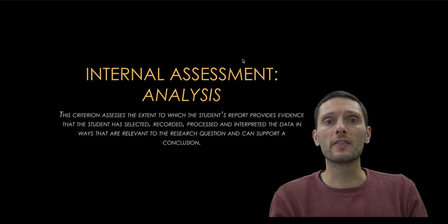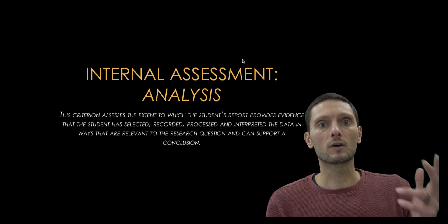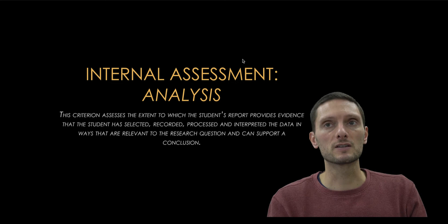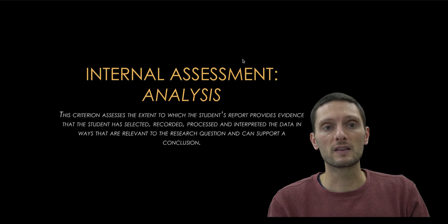In this video, I want to look at the analysis criterion of the IA. This criterion assesses the extent to which the student's report provides evidence that the student has selected, recorded, processed, and interpreted the data in ways that are relevant to the research question and can support a conclusion. The analysis criterion is marked on a scale of six to zero, with five to six being the highest marks.